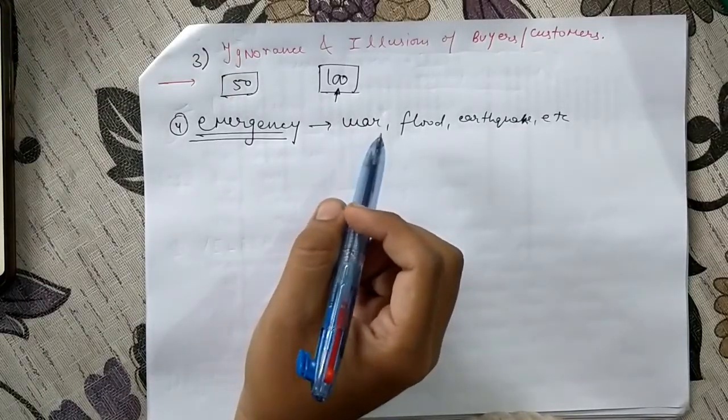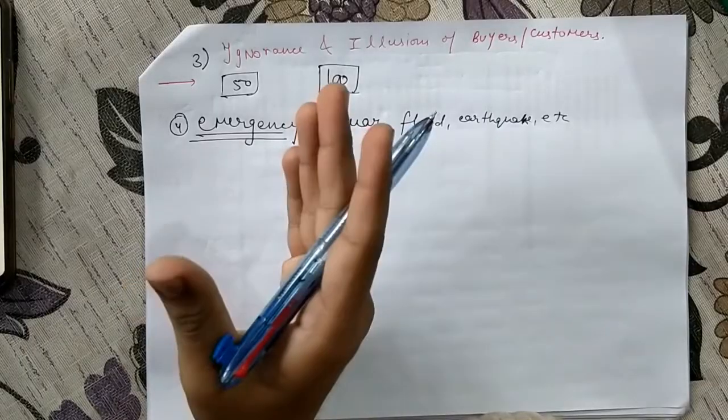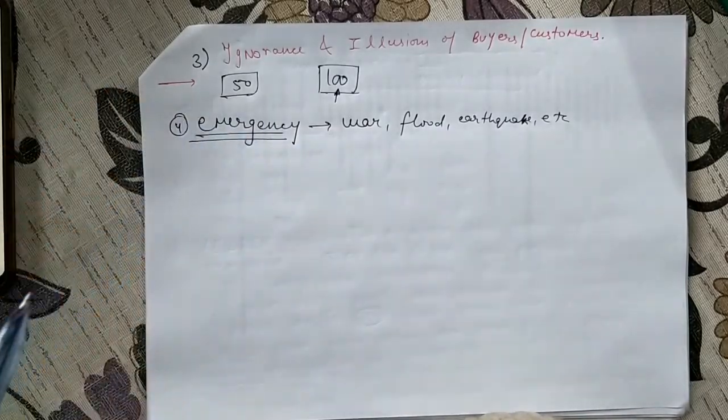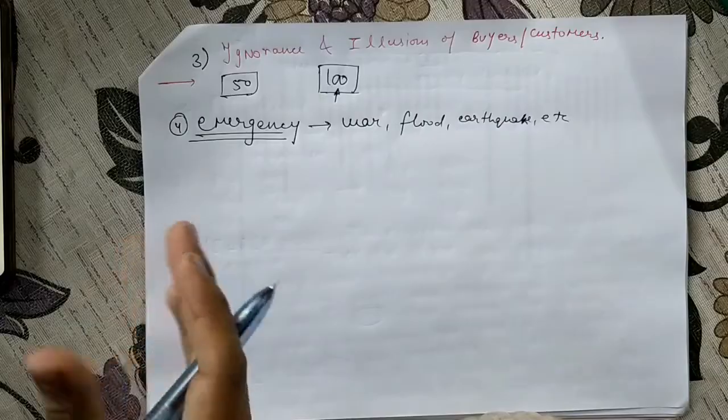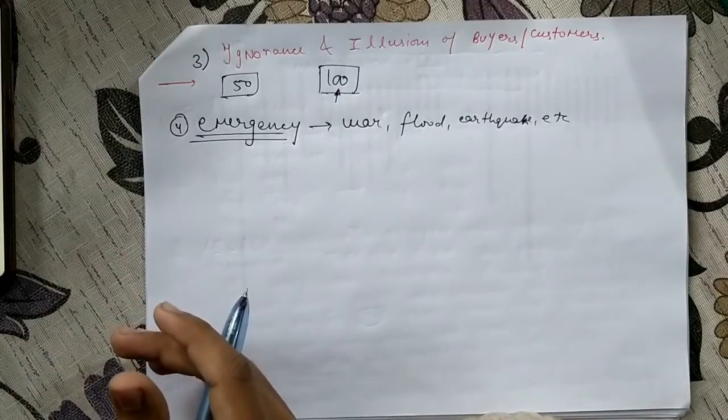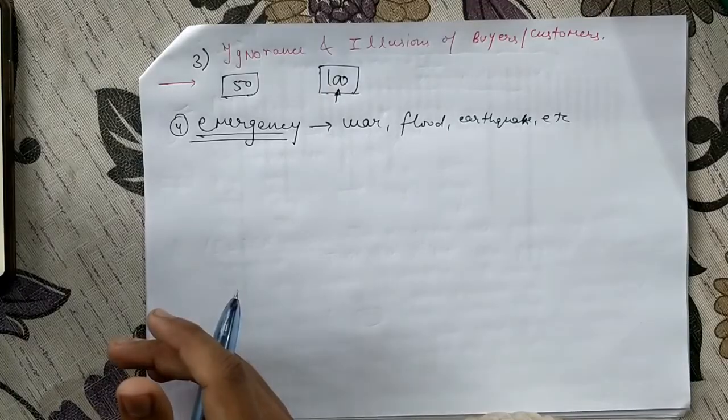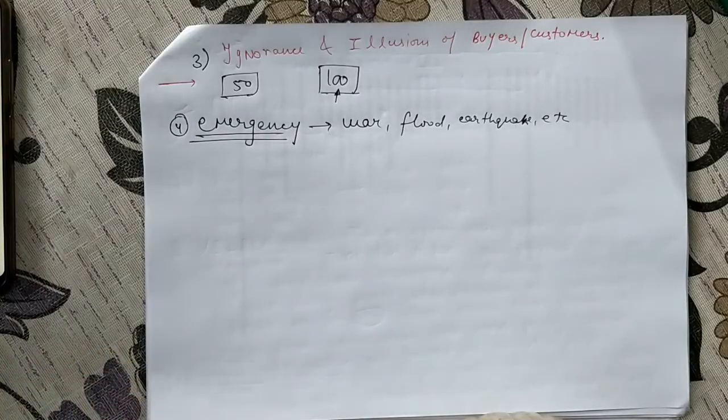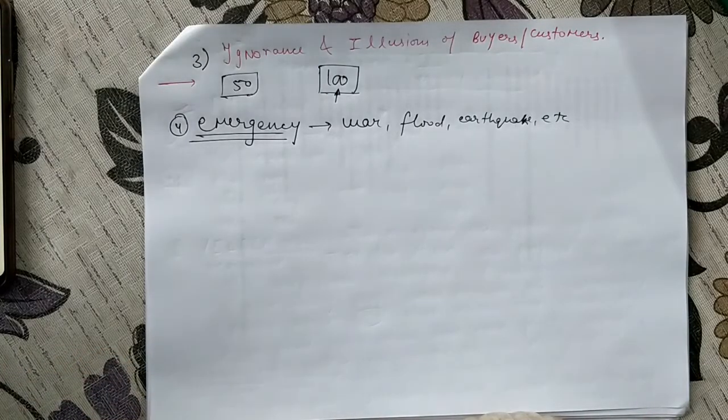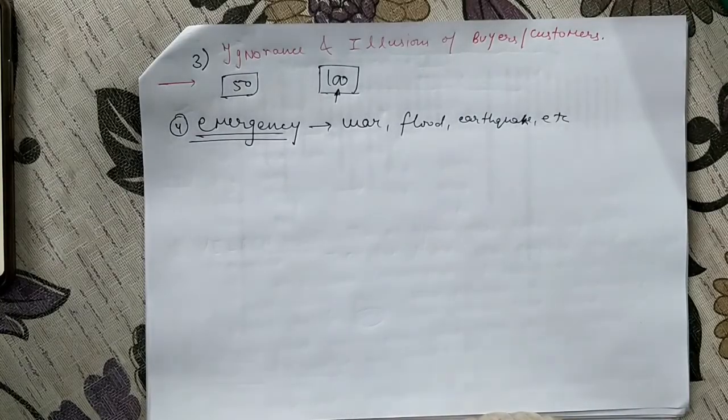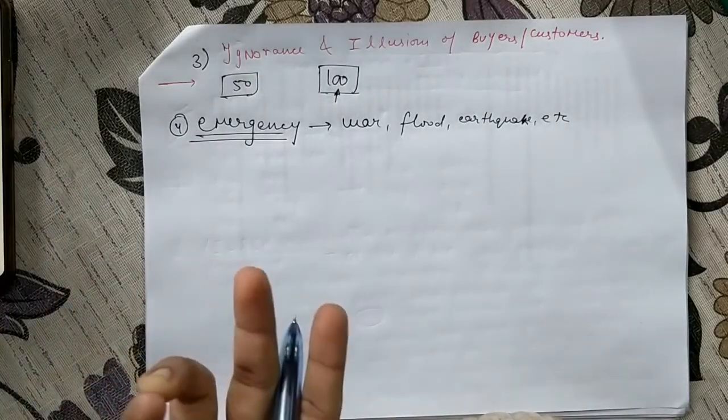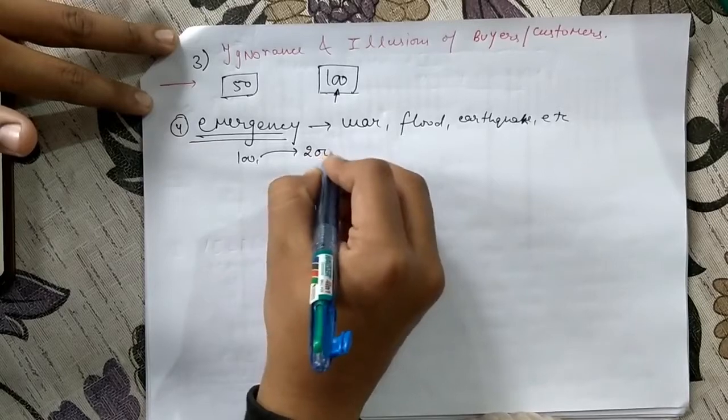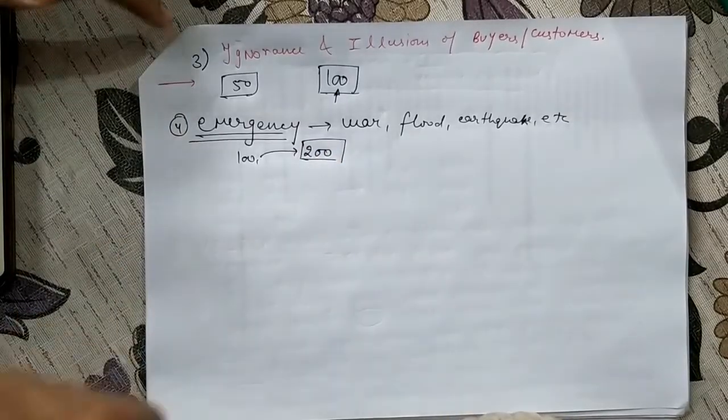What happens in this is people will not think whether they should spend this much money or not. If they have to buy it, they will buy it. For example, someone is sick and even if the cost is very high for that medicine, they'll have to purchase it. And if they know that there is a war going on or there is a flood, there will be shortage of food, so more and more people will buy to store them. It does not matter whether the product costs 400 rupees when it's normally available in the market for 200 rupees—we will buy it. So this is the fourth point.